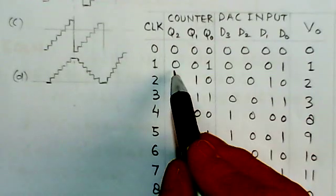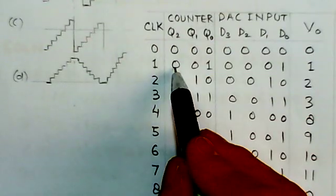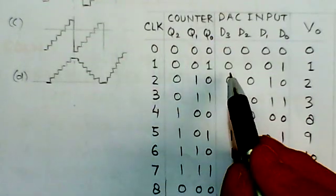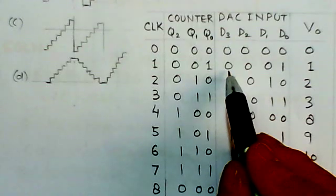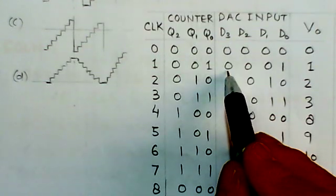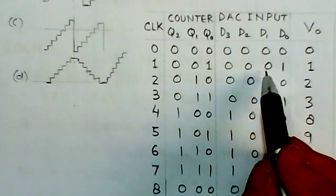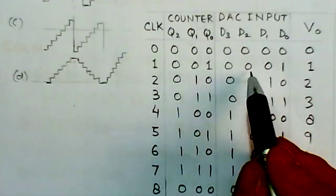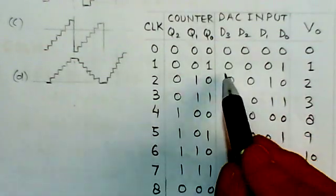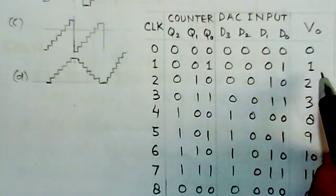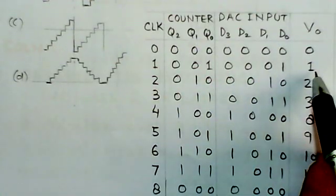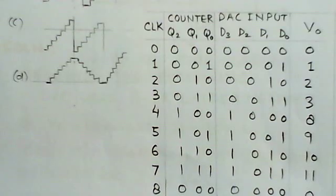When the first clock pulse comes, the output of the counter would be 0, 0, 1. The corresponding input of D2A converter would be 0, 0, 0, 1 because this is 0, 0, 1 and D2 is 0, so there will be 0, 0, 0, 1 and it will give me the output as 1.